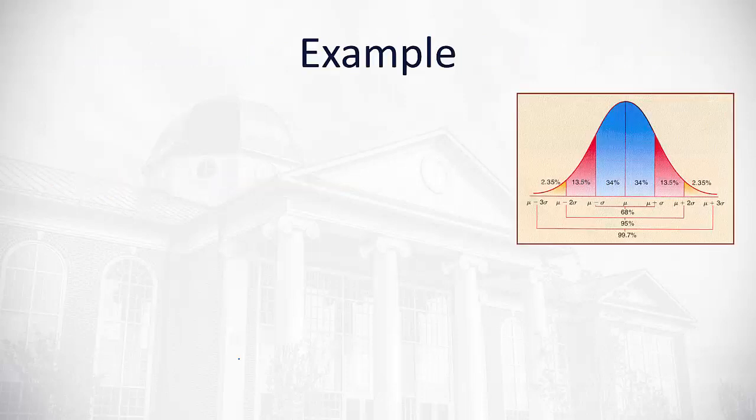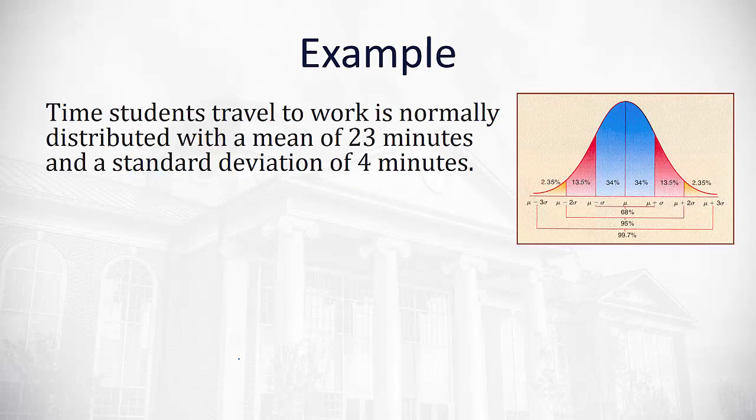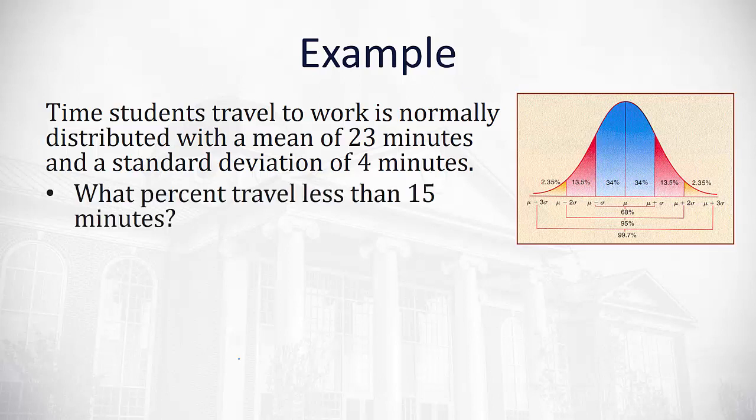Let's take a look at an example, and I put a copy of our empirical rule picture over on the right. Let's say the time a student travels to work is normally distributed. The average student takes 23 minutes with a standard deviation of 4 minutes to get to work.